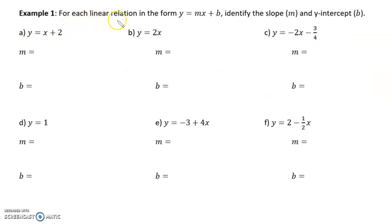Example 1, for each linear relation in the form y equals mx plus b, identify the slope, which is m, and the y-intercept, which is b. So, when we're doing these, we could simply stack y equals mx plus b, and this will be the m, the number in front of x, which is 1. And this will be the b, the number tagged on to the back of the equation, which in this case is 2.